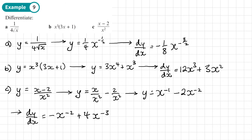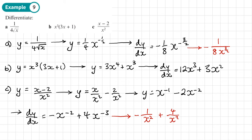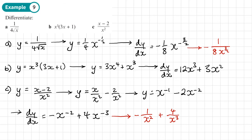We'll quickly look at alternative ways of writing the answers. For part a, we could write the result as negative 1 over 8 times x to the power 3 over 2, taking the negative power to the bottom. For part c, we could write the answer as negative 1 over x squared plus 4 over x cubed. These are alternative ways of writing our solutions if needed. You should now be able to do exercise 12e on pages 267 to 268 of the textbook.